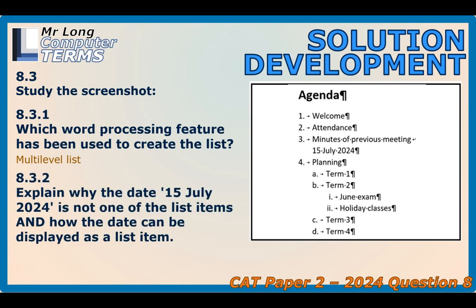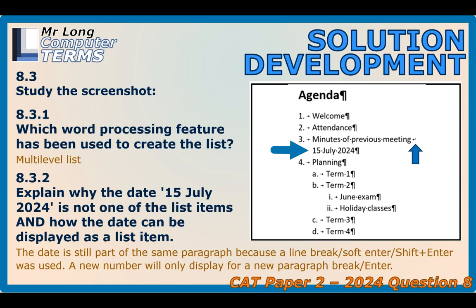The 15th of July 2024 is not listed as number four on the agenda — it's underneath number three. Why is it not listed as number four? At the end of 'Minutes of the Previous Meeting', a soft enter (Shift+Enter) was used, as shown by that symbol. A soft enter or line break means the 15th of July 2024 is considered part of the same paragraph, so it's one item. To make it a separate numbered item — number four — you would need to use a proper Enter or paragraph break instead.